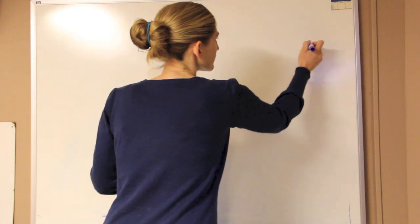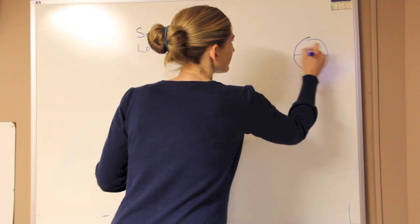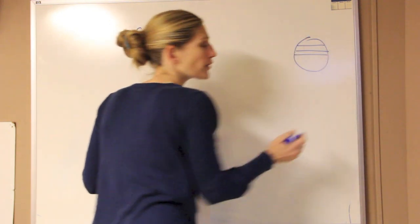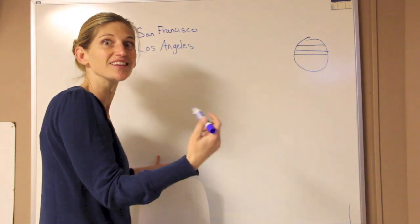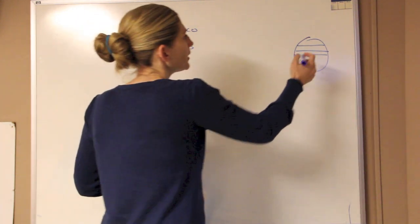So lines of latitude, if we look at the globe, the lines of latitude are the ones that go from east to west. These are like the lines on a ladder, the latitude.